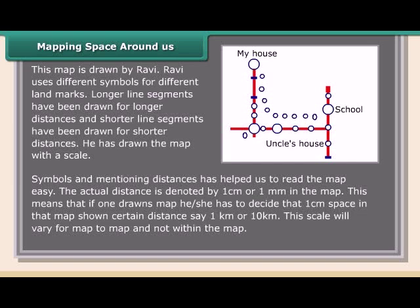The actual distance is denoted by one centimeter or one millimeter on the map. This means that when drawing a map, one has to decide that one centimeter of space represents a certain distance, say one kilometer or ten kilometers. This scale will vary from map to map but remains consistent within a single map.